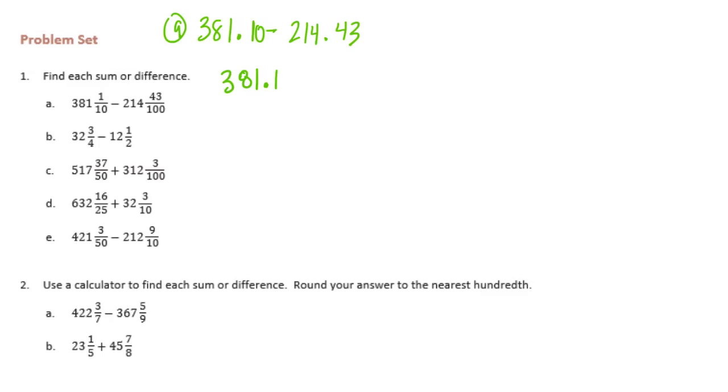I'm going to bring the decimal point straight down. We can't do 0 minus 3, I'm going to borrow. 10 minus 3 is 7. Can't do 0 minus 4, so I'm going to borrow.